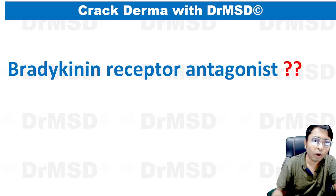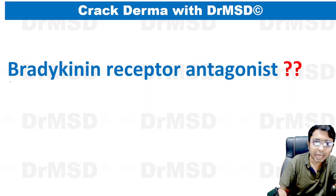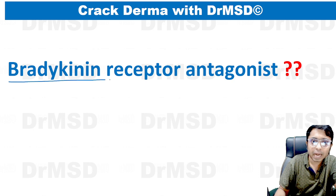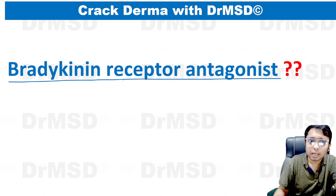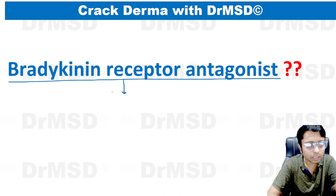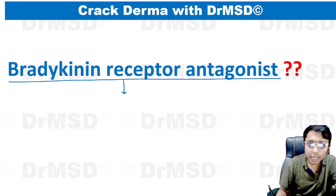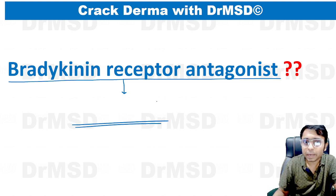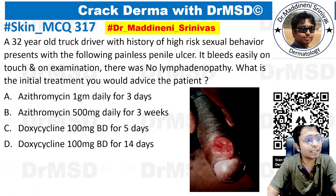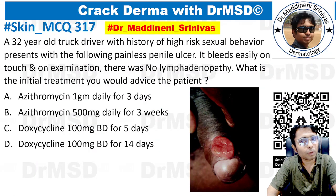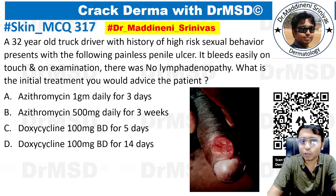There is one more question: bradykinin receptor antagonist. There is one drug which acts against bradykinin receptors — can any one of you tell me the name of this medication? This is going to be tomorrow's question, so if you know the answer, please try to answer in the comment section.